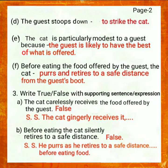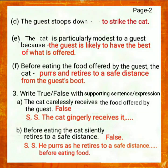Question No. 3: Write true or false with supporting sentence or expression. A. The cat carelessly receives the food offered by the guest. Answer: False. Supporting sentence: the cat gingerly receives it. B. Before eating, the cat silently retires to a safe distance. Answer: False. Supporting sentence: he purrs as he retires to a safe distance before eating food.